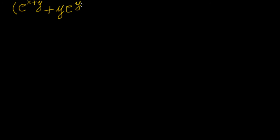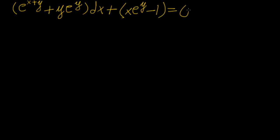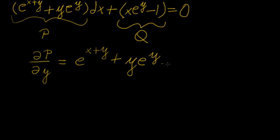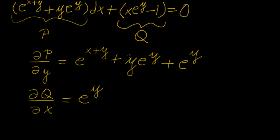I'm going to illustrate this with an example. Say you're given the differential equation: (e^(x+y) + y·e^y) dx + (x·e^y − 1) dy = 0. We can immediately call the first part P and the second part Q. The partial derivative of P with respect to y is e^(x+y) + y·e^y + e^y, using the product rule. The partial derivative of Q with respect to x is e^y. Clearly these two are not equal, which means this is not an exact differential equation.